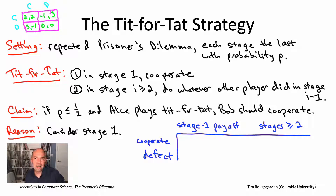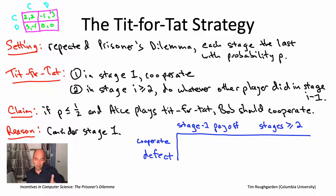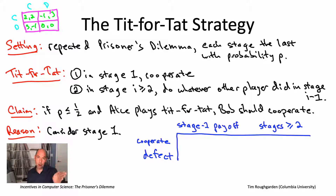Now let's return to the cost-benefit analysis under the assumption that Alice is playing tit-for-tat. Bob looks at stage one and asks: should I cooperate or defect? Given that Alice is cooperating — since she's playing tit-for-tat and starts optimistically — we're looking at the upper row of the payoff matrix. Bob's decision is either to cooperate, getting a payoff of two, or to defect, getting a higher payoff of three.